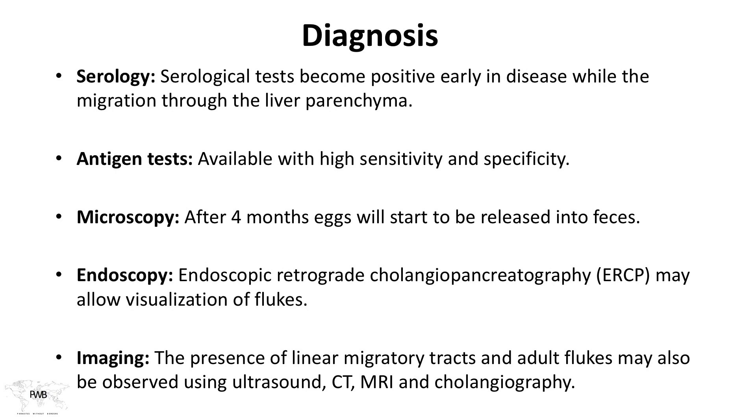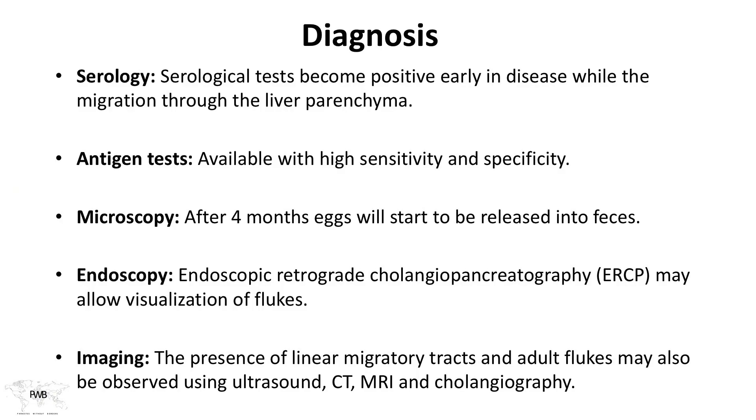Serological tests become positive early in disease while the worm is migrating through the liver parenchyma — before it has reached the biliary system. At this stage you won't detect any eggs in the stool, and ova and parasite tests won't help. But serology, several weeks in, will already show an immune response. Antigen tests are also available. For microscopy you have to wait about four months until eggs are actually released into the feces.